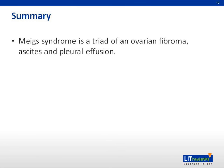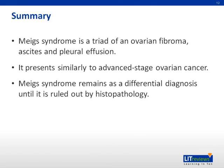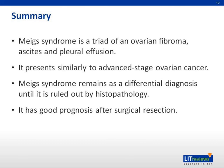In summary, Meigs' syndrome is a triad of an ovarian fibroma, ascites, and pleural effusion. It presents similarly to advanced stage ovarian cancer. Meigs' syndrome remains as a differential diagnosis until it is ruled out by histopathology. It has a good prognosis after surgical resection.